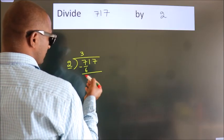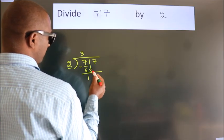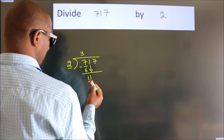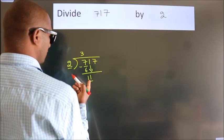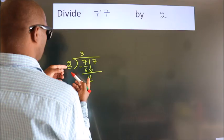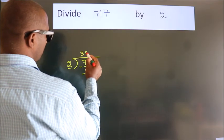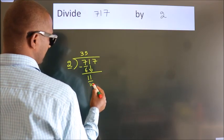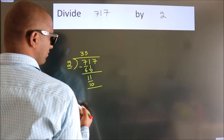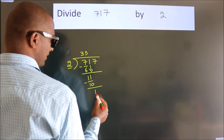After this, bring down the beside number. So 1 down. So 11. A number close to 11 in the 2 table is 2 times 5 is 10. Now we subtract. We get 1.